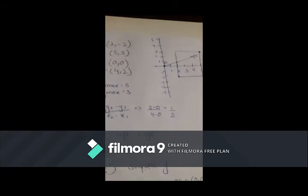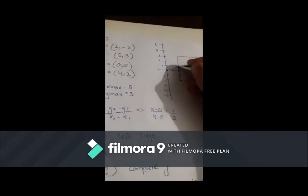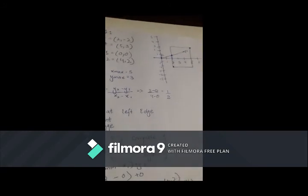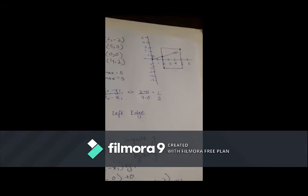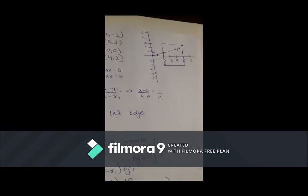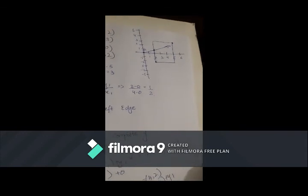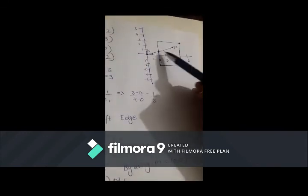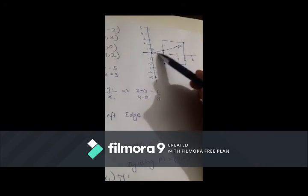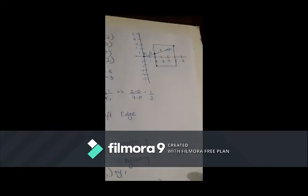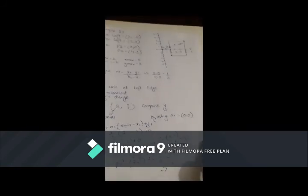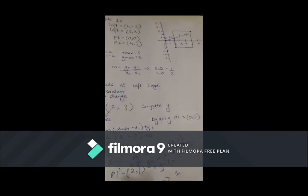So here we have this point which intersects the edge. Line point intersects the canvas edge. So here we have a point of intersection. This region is accepted region, and here we have this region which is rejected. This way this example will solve. Thank you.